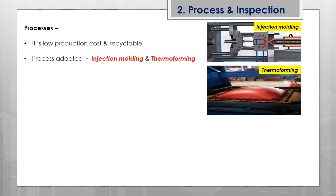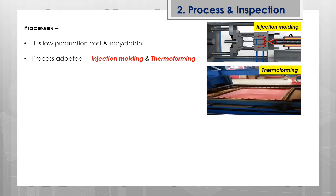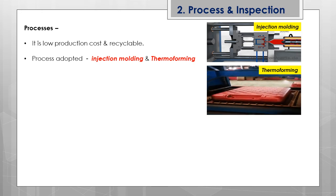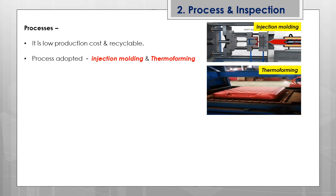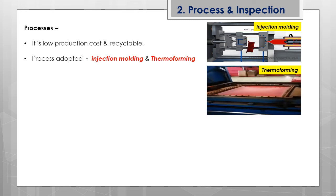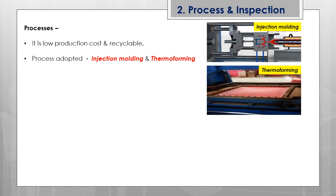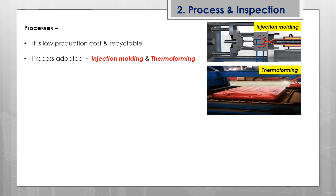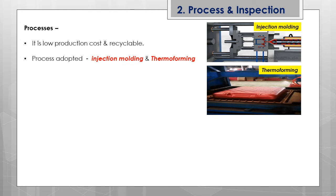The second process used for ABS is thermoforming, shown in the video. A sheet of ABS is placed on a die, slightly heated, and then formed using pressurized air to replicate the die shape. The final product comes out as a replica of the die. Thermoforming is a cheaper process and produces less waste.